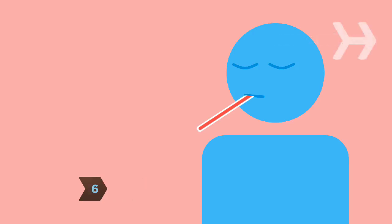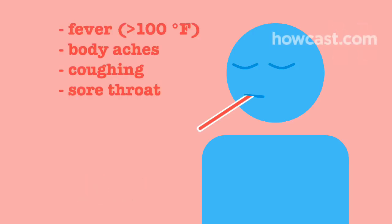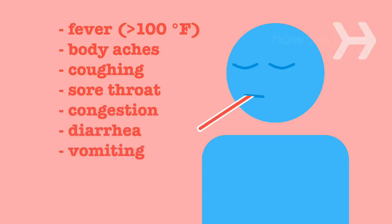Step 6: Know the symptoms, which include a fever higher than 100 degrees, body aches, coughing, a sore throat, and respiratory congestion. Some people have diarrhea and vomiting, too.